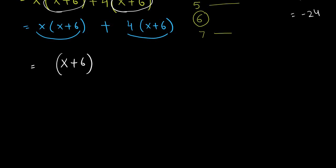That means we can take x + 6 common again. And in this term what is left? Just the x. And in this term what is left? Just the 4. Because we have taken those brackets out. Now I just factorized my quadratic trinomial into (x + 6)(x + 4).